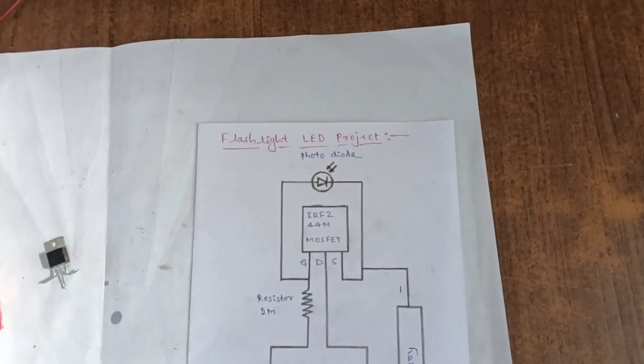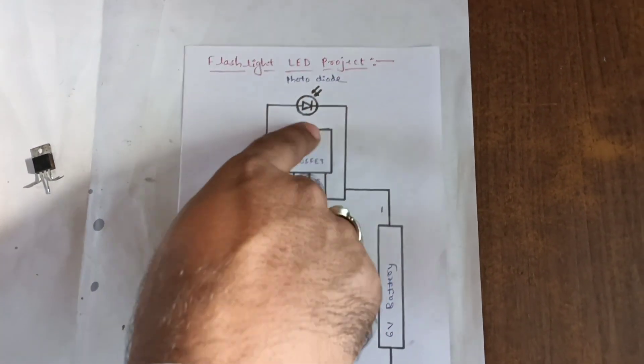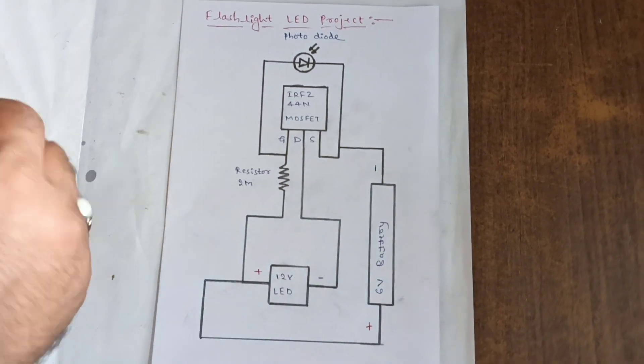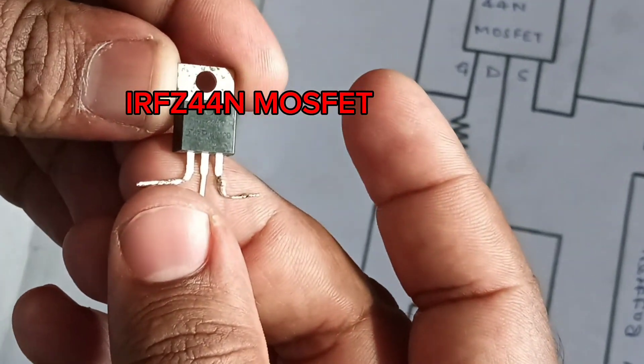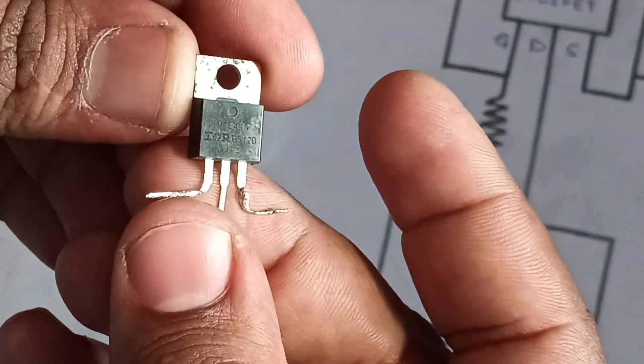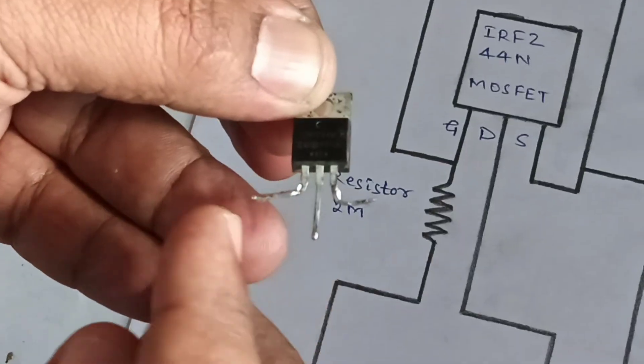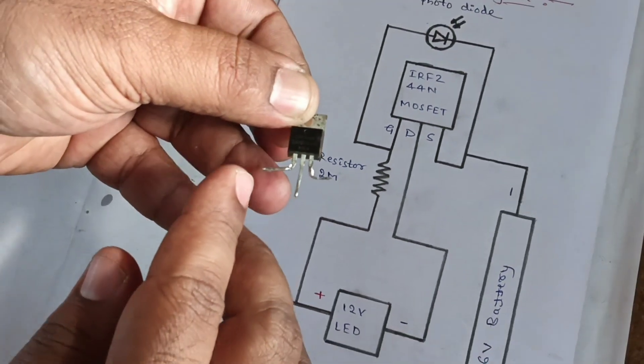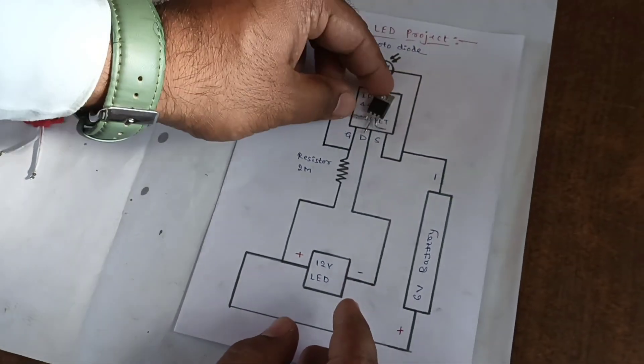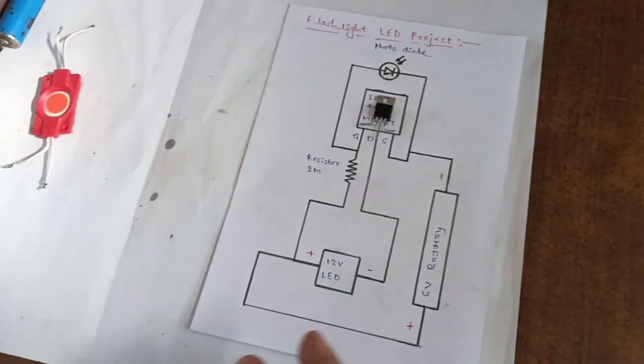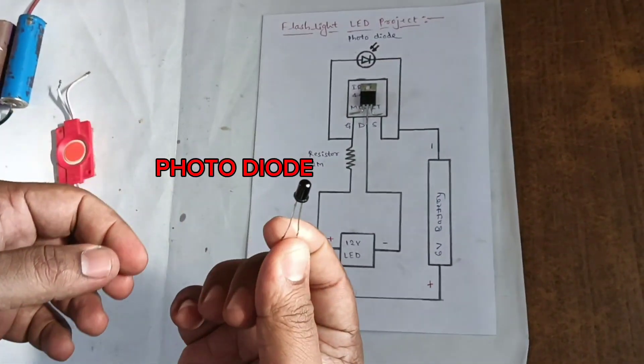Welcome to our channel. Flashlight LED project. In this project we use IRF Z44N MOSFET. It has three terminals: first one gate, second drain, third source as shown in this diagram. Next we have taken here one photodiode.